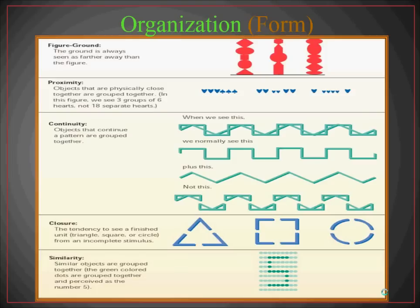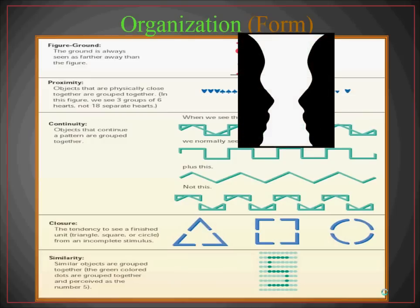Figure-Ground is when the ground is always seen as being farther away than the figure. The infamous example: do you see a white vase, or do you see two people in black facing each other in profile? Figure-Ground says if you're focusing on the vase, the black is seen as background and generally further away. But if you change your perception and focus on the people, you see the white as background, slightly further away. Depending on how you organize things, you're naturally seeing things as having some distance — even though this is a flat two-dimensional picture.